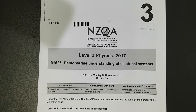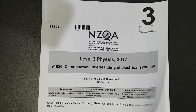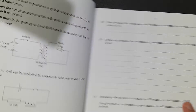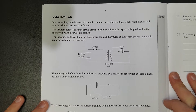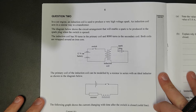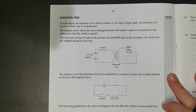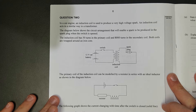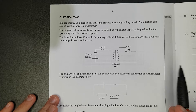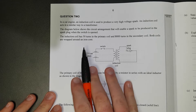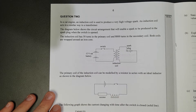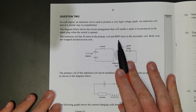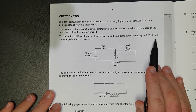For this video, I'll be working through question 2 of the level 3 2017 electricity exam. In a car engine, an induction coil is used to produce a very high voltage spark. An induction coil acts in a similar way to a transformer. The diagram below shows the circuit arrangement that will enable a spark to be produced in the spark plug when the switch is turned on. The induction coil has 50 turns in the primary and 8,000 turns in the secondary.